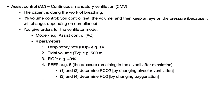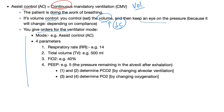Assist control or continuous mandatory ventilation is a volume control mode: you set the volume and watch the pressure. When placing an order for the ventilator, you specify: mode — assist control; respiratory rate — 14; tidal volume — 500; FiO2 — 40% oxygen; PEEP — 5 (do not let intra-alveolar pressure drop below 5, to keep alveoli open). Parameters 1 and 2 (rate and tidal volume) control PCO2; parameters 3 and 4 (FiO2 and PEEP) control oxygenation.